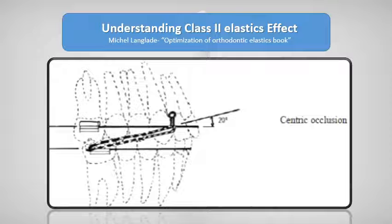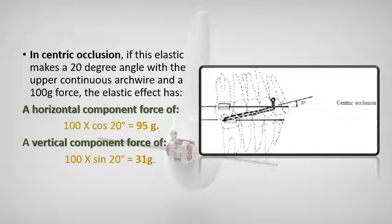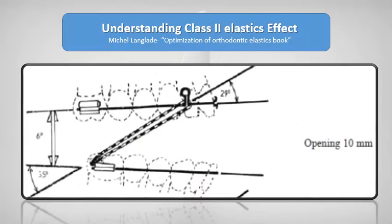Understanding Class 2 elastic effects during centric occlusion: if the elastic makes a 20-degree angle with the upper continuous arch wire and the force is 100 grams, the elastic effect has a horizontal component of force of 95 grams and a vertical component of force of 31 grams.